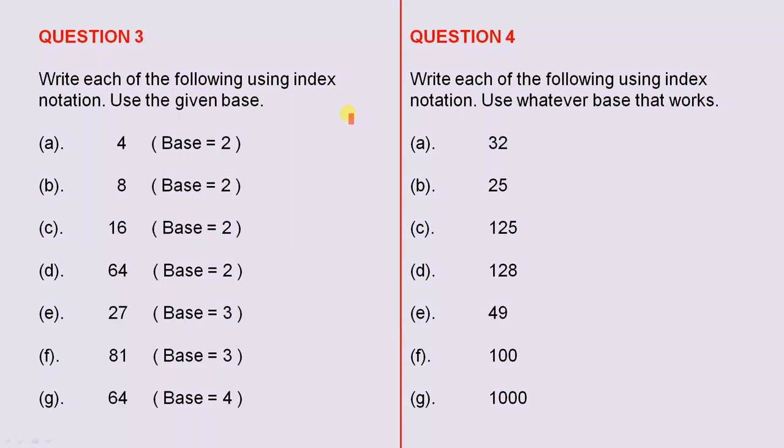Question three: write each of the following using index notation, use the given base. So 4 will be 2 to the power of something, 8 is 2 to the power of something, 16, 2 to the power of something, 64, 2 to the power of something.